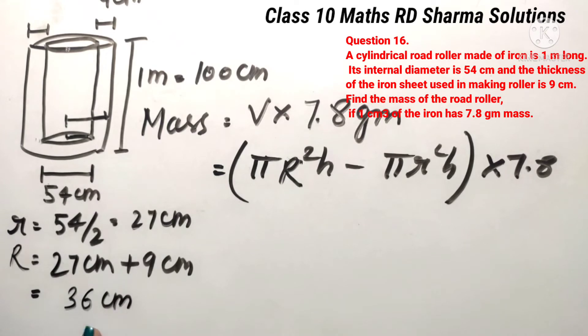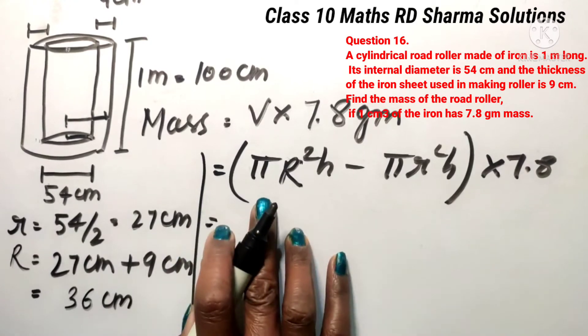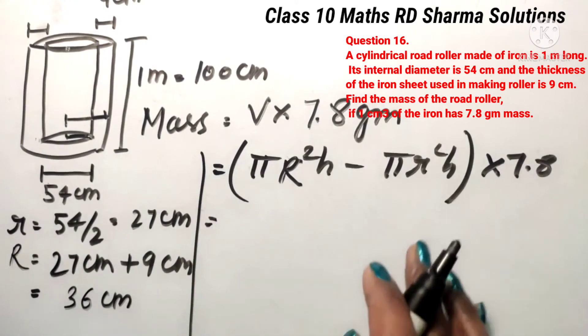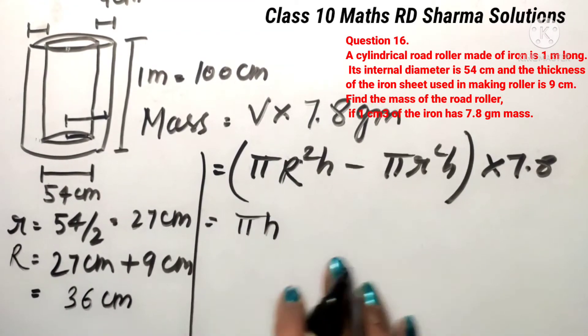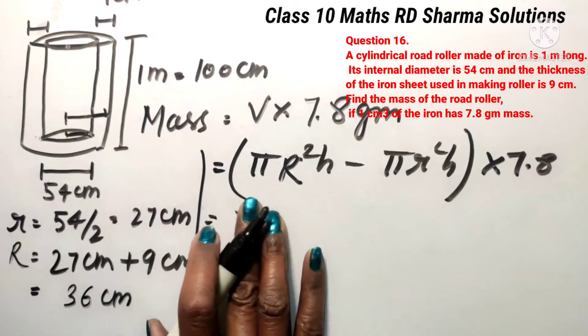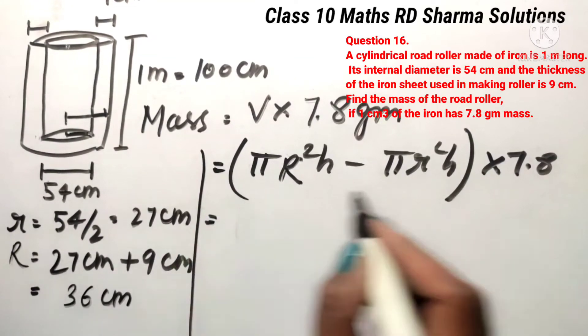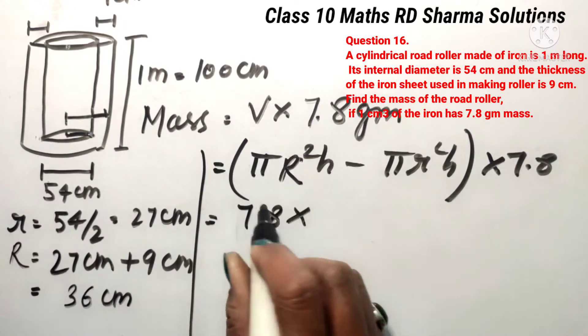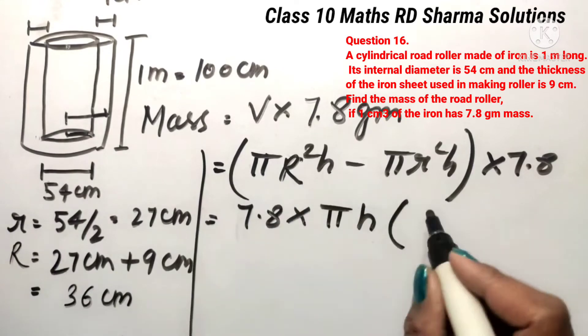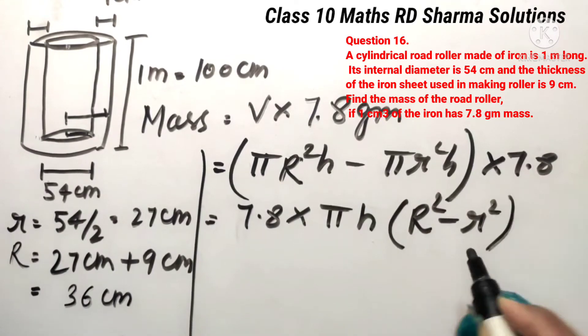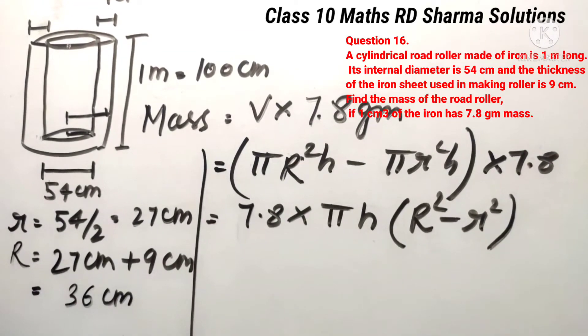Now we will use these values in the formula, but we can simplify it first. So now we can simplify this formula. Pi r square h, and this is like the previous question. We take pi and h common, and we take this 7.8, so we don't forget the calculations. I will take the 7.8 into pi and h common. So, after taking pi and h common, we have R square minus r square.